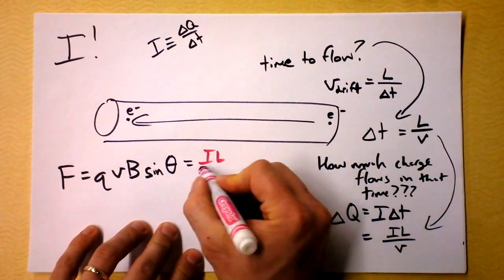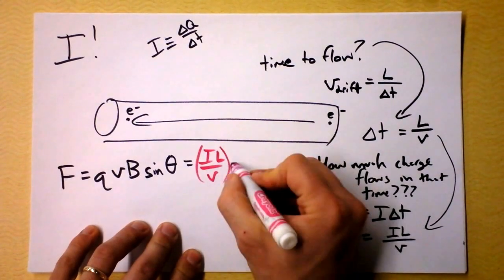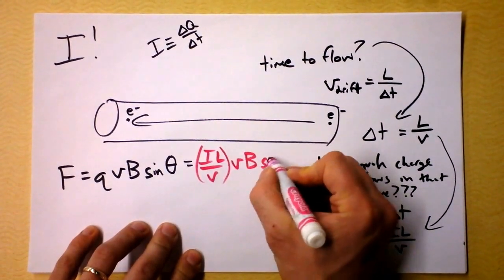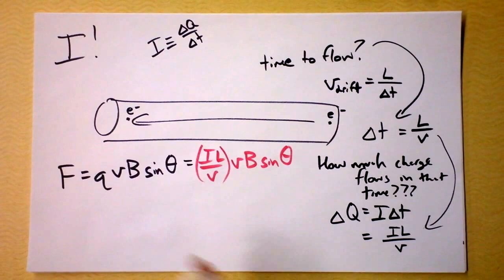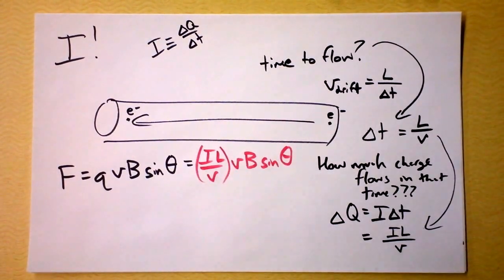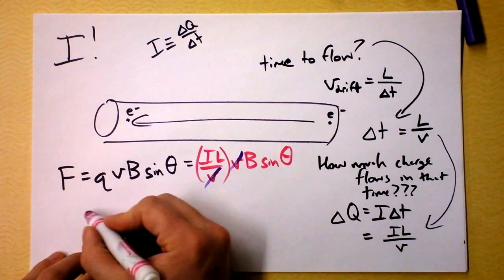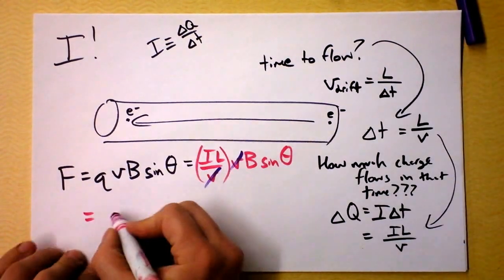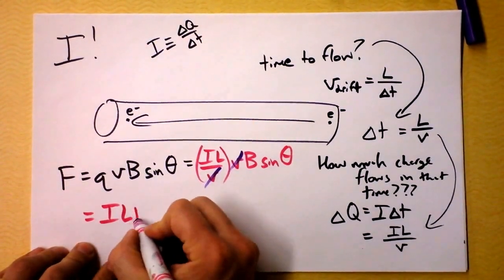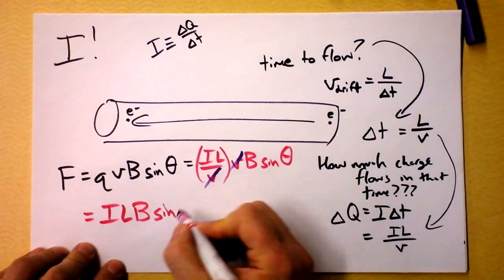i times l over v times v times b. Ooh, look at that v right there. Do you see what I see? I'm going to take some purple here and I'm going to cross that out because it's gone. Now, I can rearrange this a little bit. This is sometimes seen as ILB.